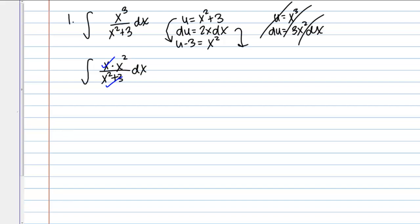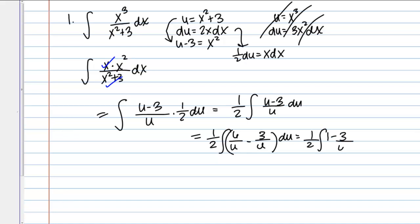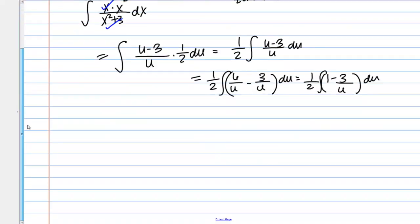Rewriting gives us one-half du equals x dx. So substituting: x squared in the numerator becomes u minus 3, x squared plus 3 in the denominator becomes u, and x dx becomes one-half du. Pulling the one-half out front, we have one-half times the integral of u minus 3 over u du. We can split this fraction: u over u minus 3 over u, which simplifies to 1 minus 3 over u.